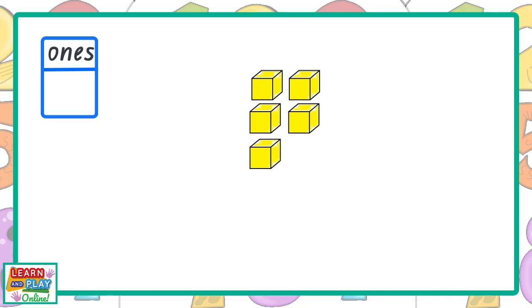To help us learn about place value, we will be using these little blocks. We can call them ones or units. Let's count the ones as they appear. One, two, three, four, five. So how many ones do we have? Five. We call this a one-digit number because there is only one digit.